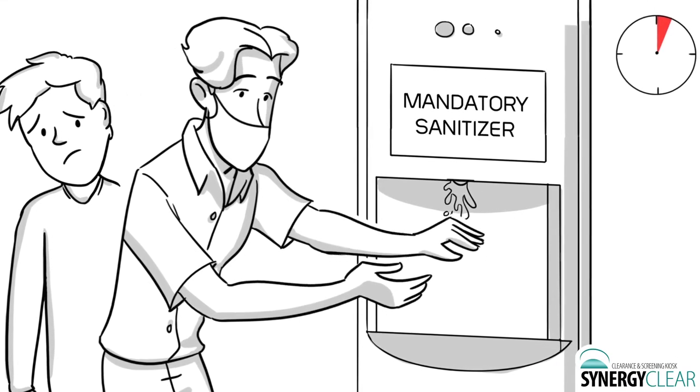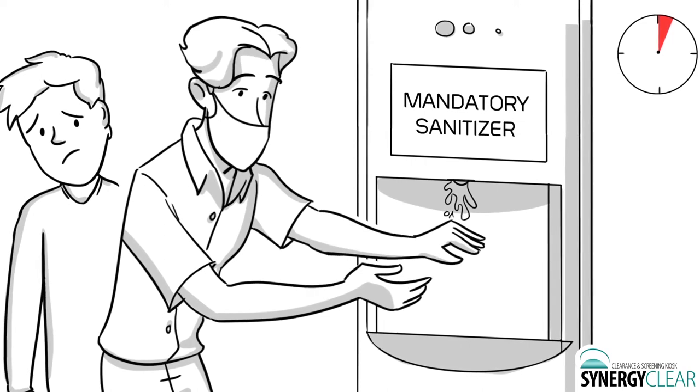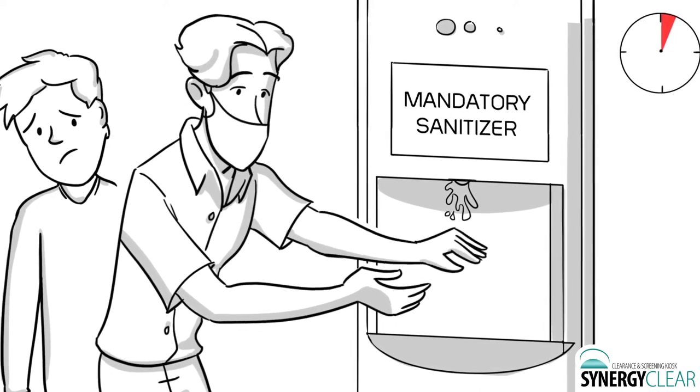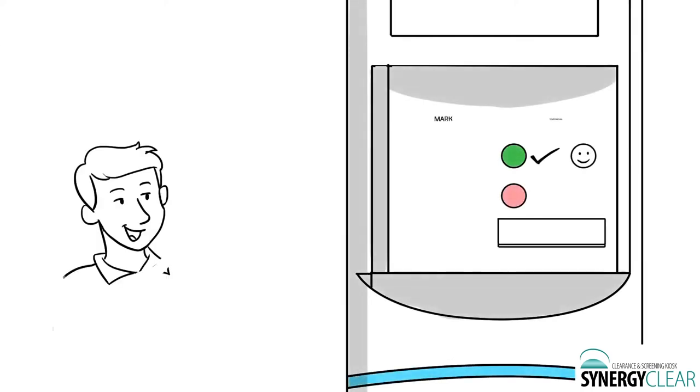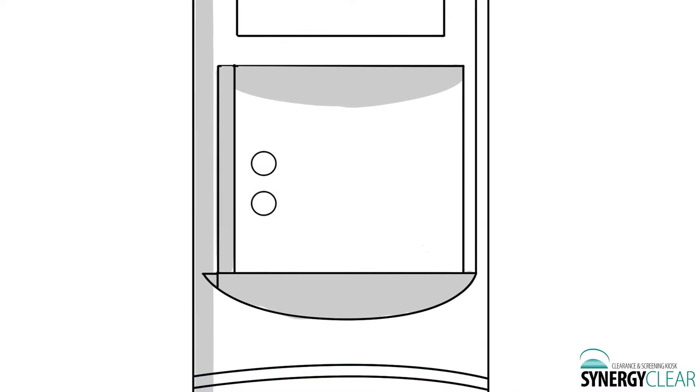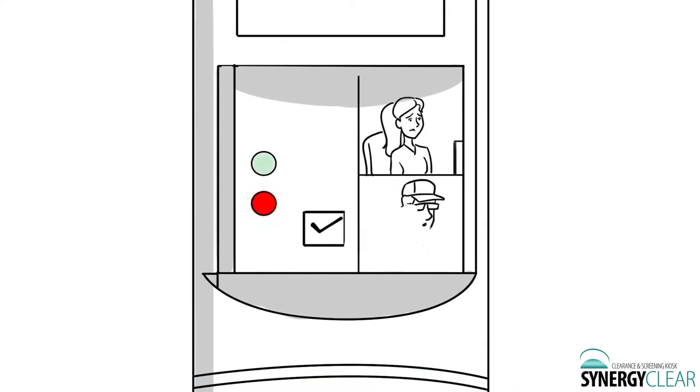Synergy Clear Kiosk is an ADA-compliant device that performs a scan and presents a message for the user to proceed or wait for instruction. A green light indicates that your temperature is within normal range and you have used hand sanitizer. A red light indicates that you are above an acceptable threshold or you have not sanitized your hands.